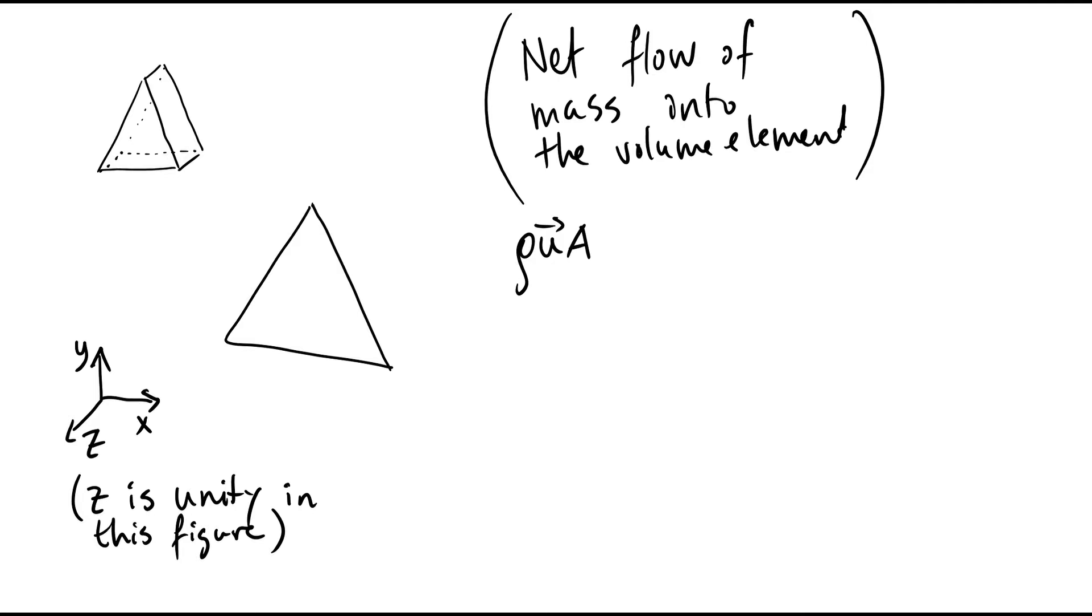To find the component that goes into the fluid element, we multiply this by the surface normal. Here, the normal is connected to the surface.